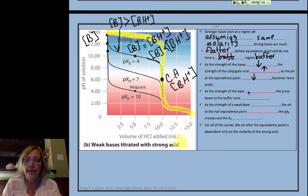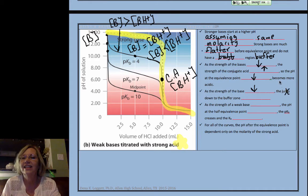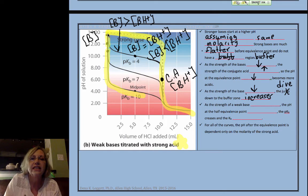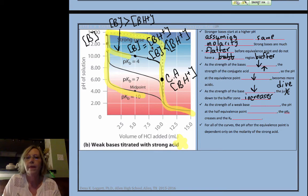As the strength of the base decreases, this says jump. I think it's a jump down or more of a dive or a plummet down to the buffer zone increases. So, do you see that from starting point down to the buffer zone, it plummets much more for this weaker one than it did for this stronger base? Remember, the strong base, that's not an issue at all.